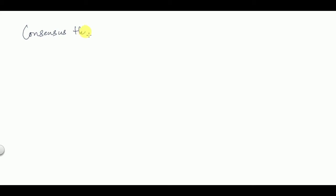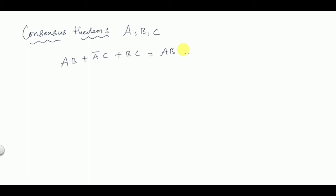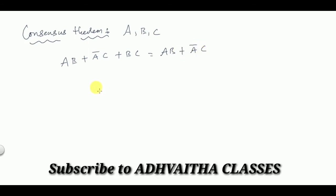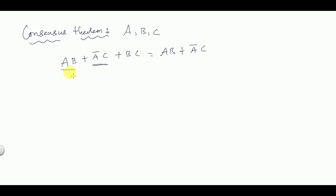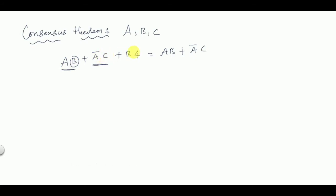Next is the Consensus Theorem. It states that if a, b, c are three literals: ab + āc + bc = ab + āc. That means if a is present with b, and ā is present with c, then the term bc — which is constituted of those two terms — can be eliminated.